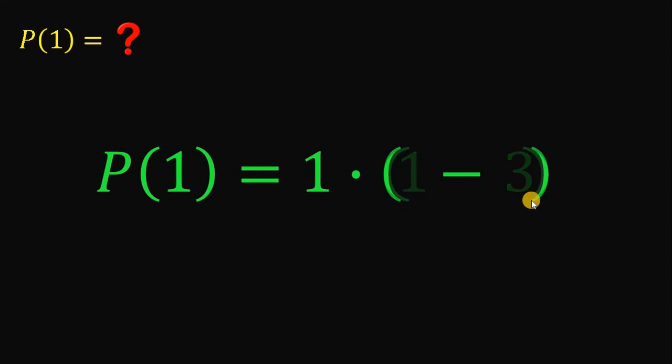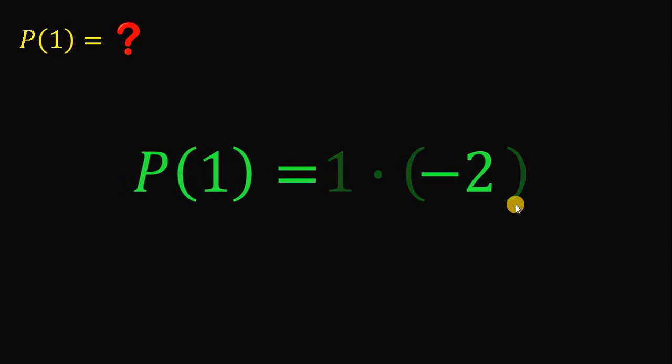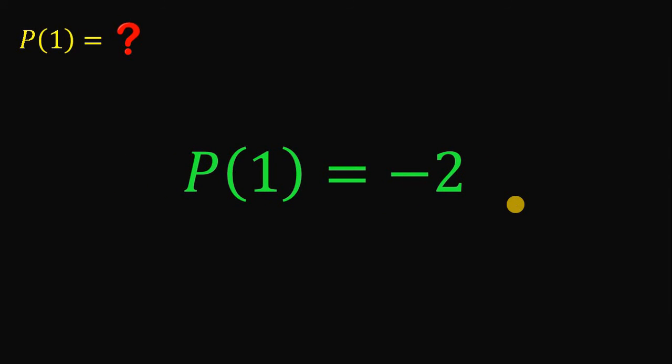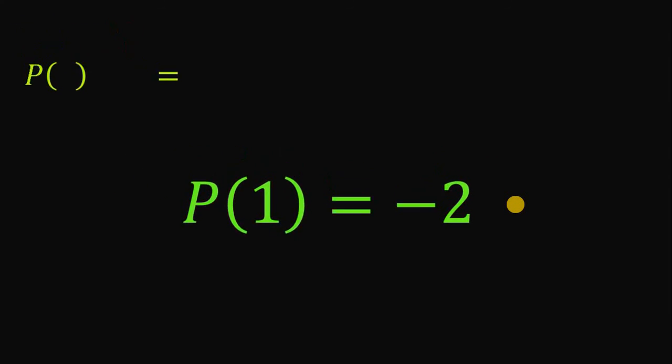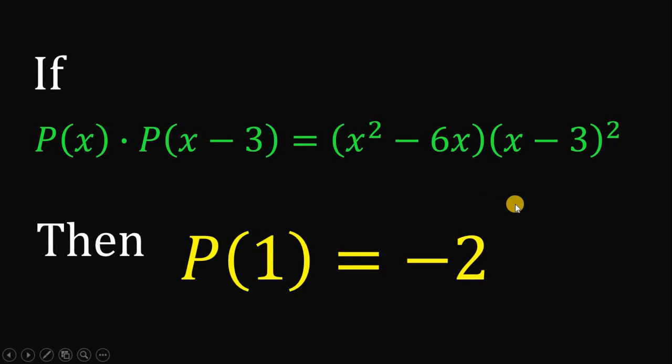1 minus 3 is just negative 2. 1 times negative 2 is negative 2. Therefore, our answer to this question is negative 2.